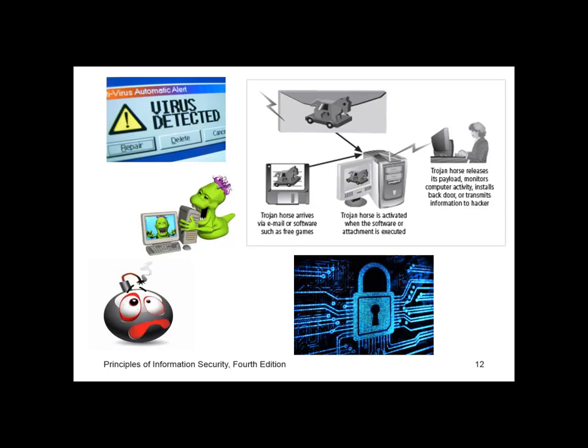A backdoor or trapdoor is a component installed by a virus or worm as a payload that allows the attacker to access the system at their own time with special privileges. Polymorphism is a threat that changes its apparent shape over time, representing a new threat not detectable by techniques looking for a pre-configured signature. These threats actually evolve, changing their size and appearance to elude detection by antivirus software programs, making detection more of a challenge.